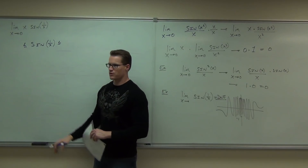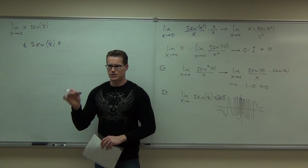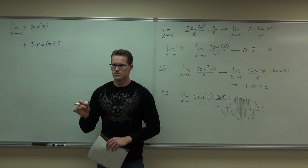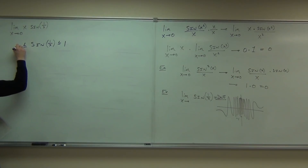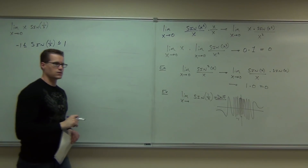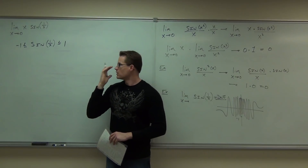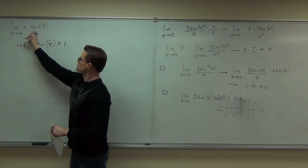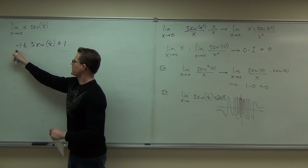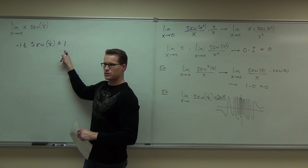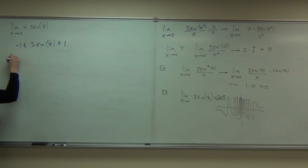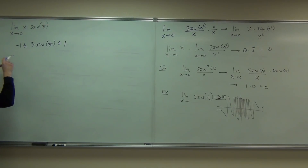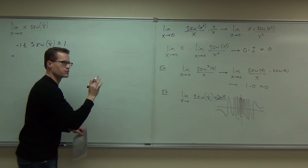So let's use some of our knowledge about sine to create some bounds on sine. Forget the 1 over x part for a second. What's the maximum value you can attain with sine — what's the highest sine goes? 1. What's the lowest sine goes? Negative 1. So you agree that's true. Now I'm going to create bounds by multiplying all three sections by x. Is that legal to do? Sure. If I multiply by x — actually, I want the absolute value of x because I don't want to change those signs.